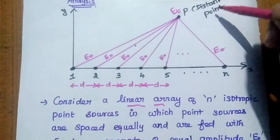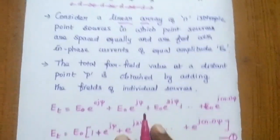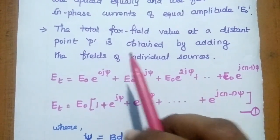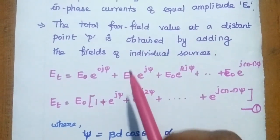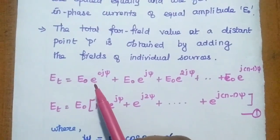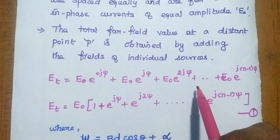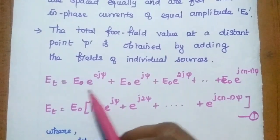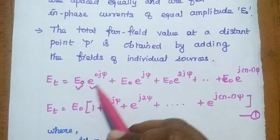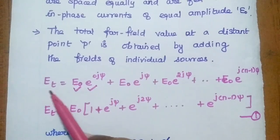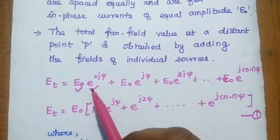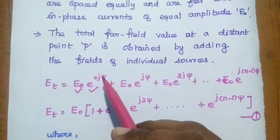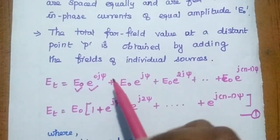We are going to find out the total electric field at a distant point P, because in antenna analysis we consider characteristics only in the far field region — that is why we assume a distant point. To obtain the total electric field at point P, we add the electric field values from individual antennas. This is a vector value — it has both magnitude and phase. The total electric field equals E₀ · e^(j·0·ψ), where e^(jψ) and ψ represents the phase difference.